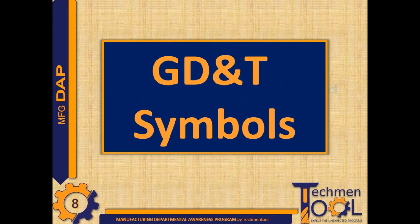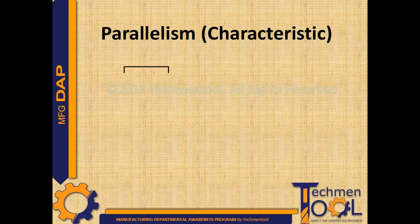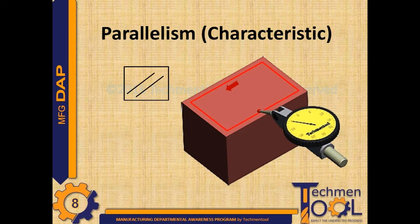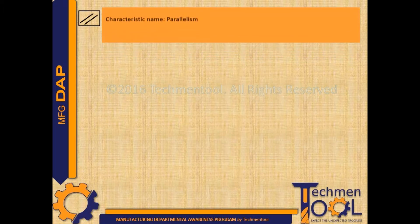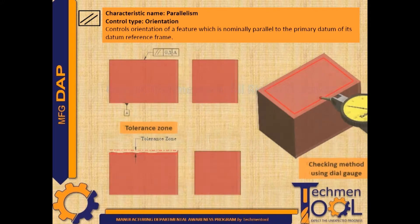This is a study about parallelism characteristic. It is a control category orientation type, and controls the orientation of a feature which is nominally parallel to the primary datum of its datum reference frame.